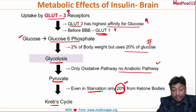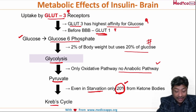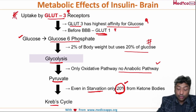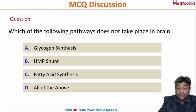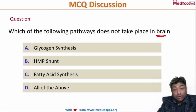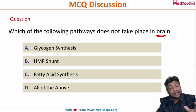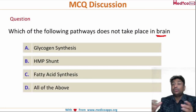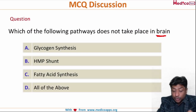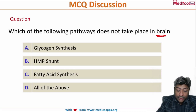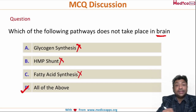This is the metabolic effect of glucose and insulin on brain, and this table is very important. Coming back to the question: in brain, only the oxidative pathway occurs, meaning whatever glucose the brain takes in, it breaks down completely to produce energy. No anabolic pathway takes place. So the correct answer is D — all of the above.